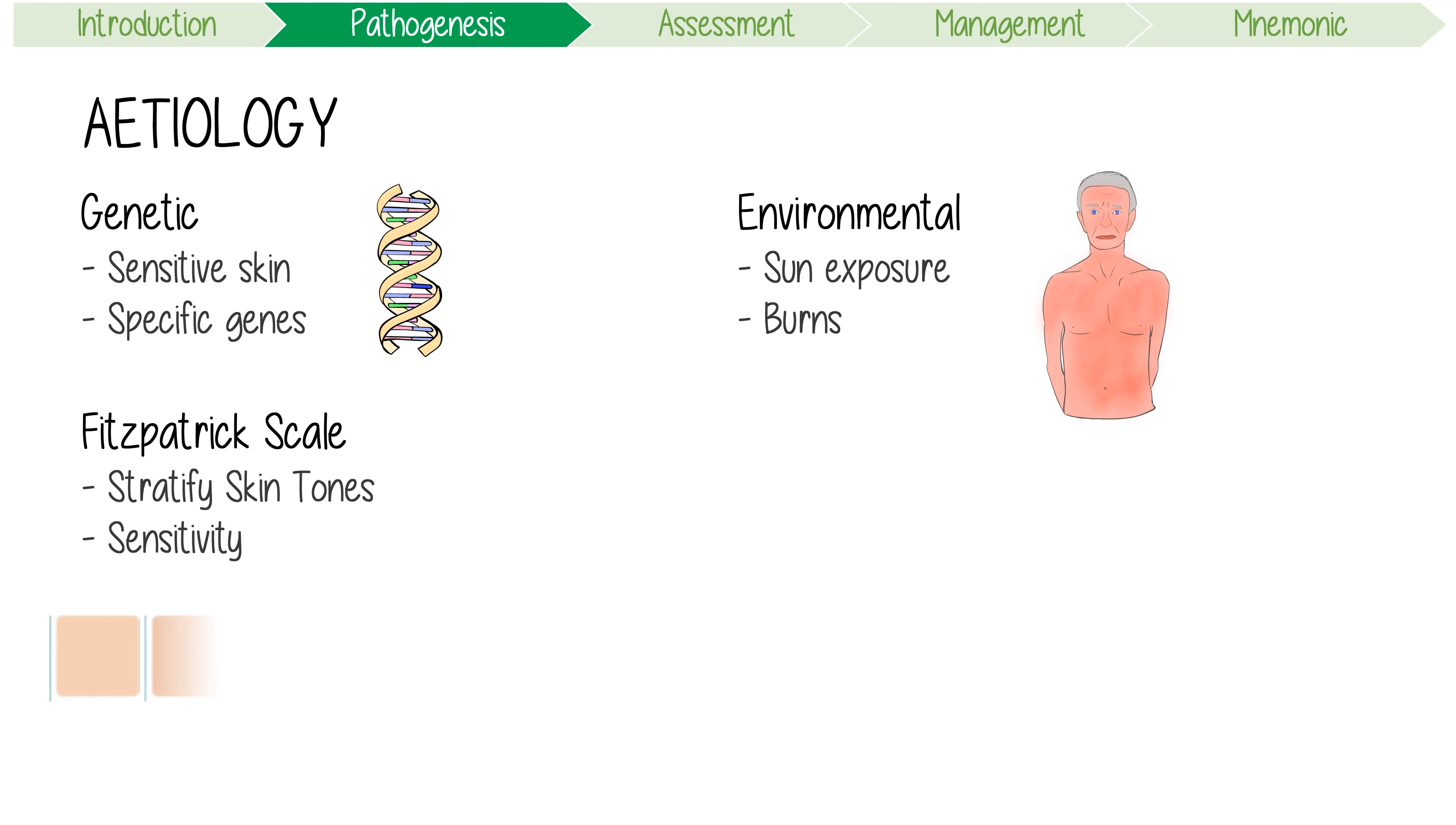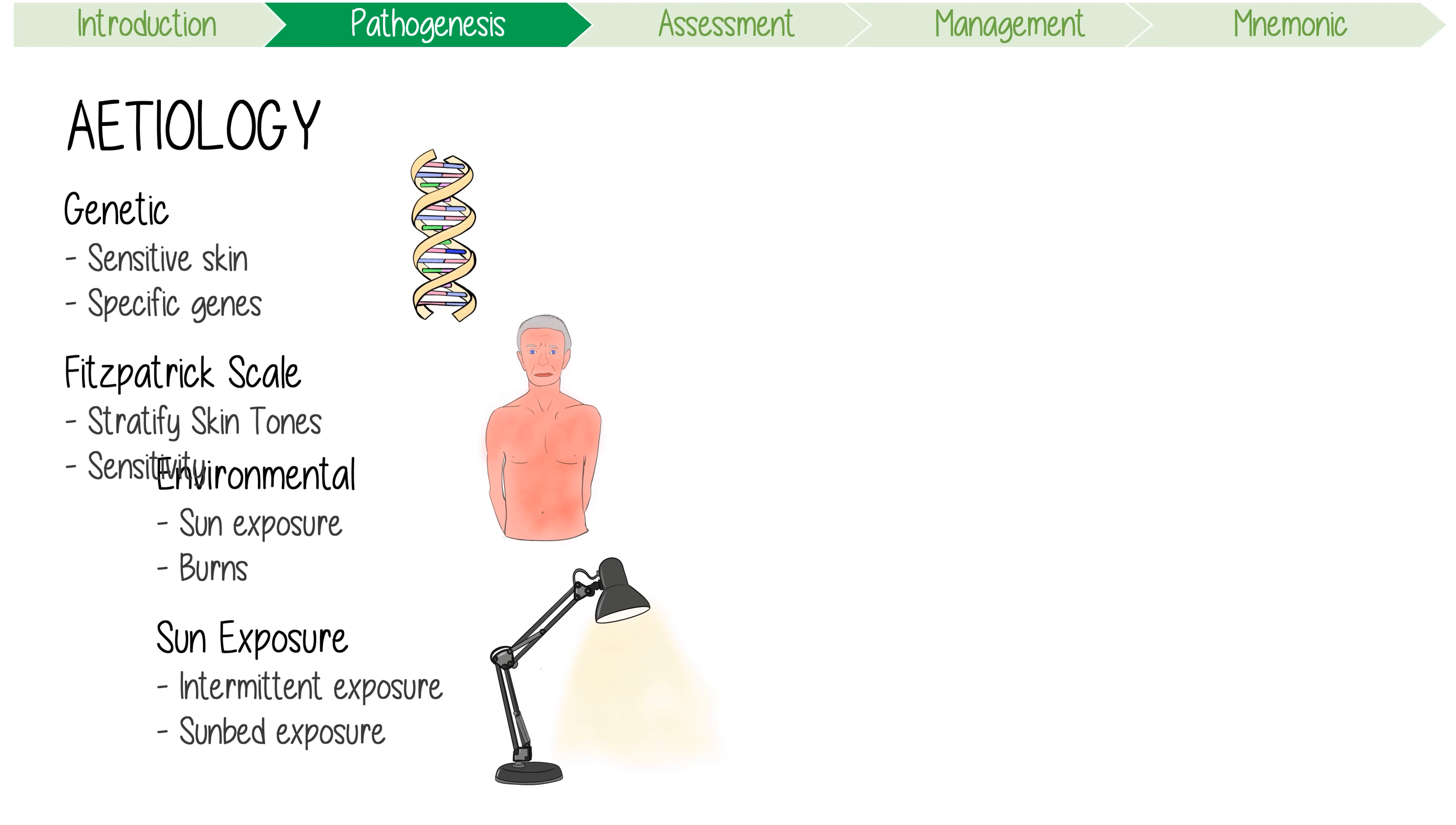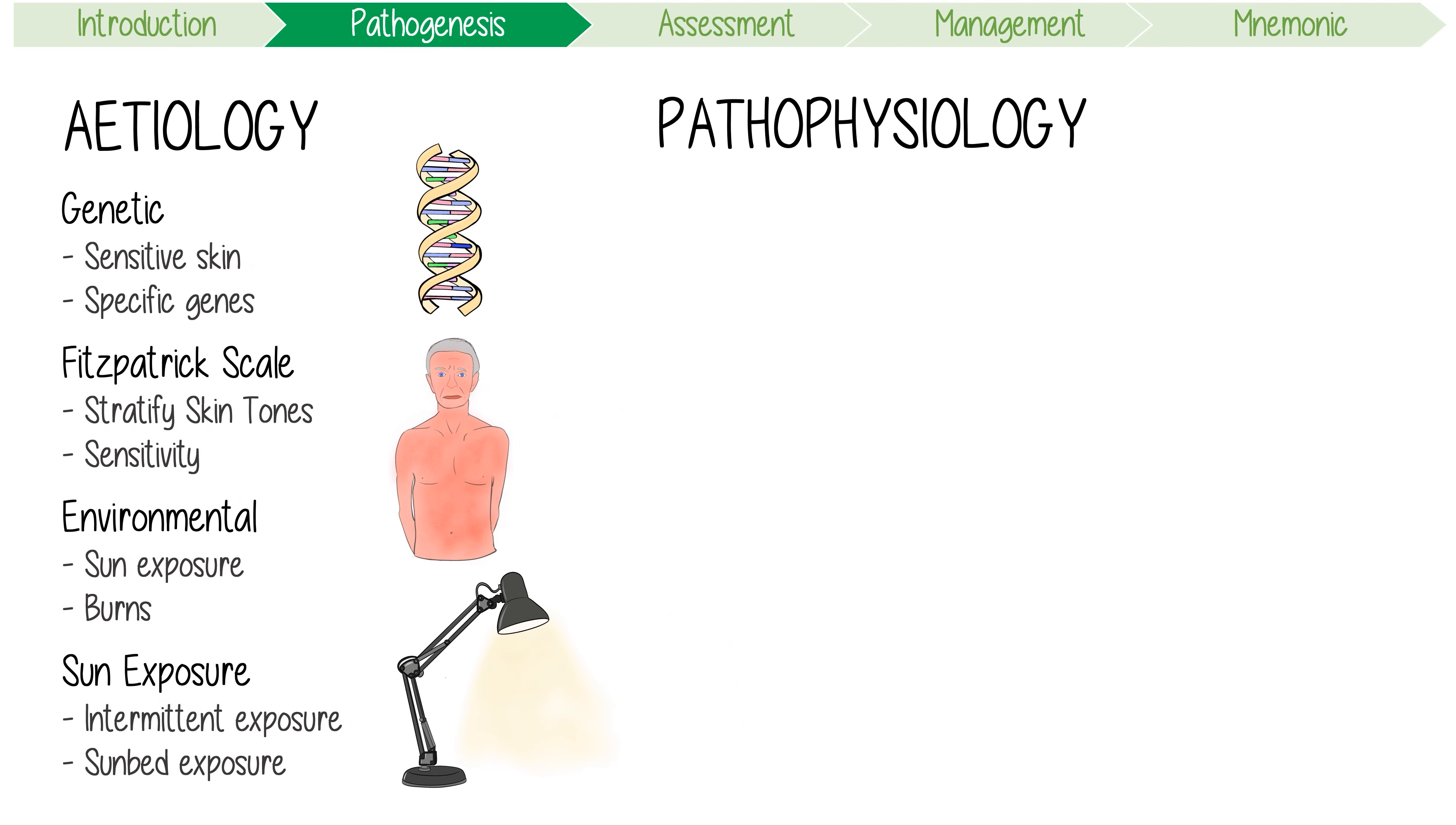It goes from type 1, which is characterized by pale white skin, to type 6, which is deeply pigmented. In terms of sun exposure, intermittent high-intensity exposure is more strongly associated with melanoma development than cumulative chronic sun exposure. Sun beds are also a key risk factor causing lots of morbidity.